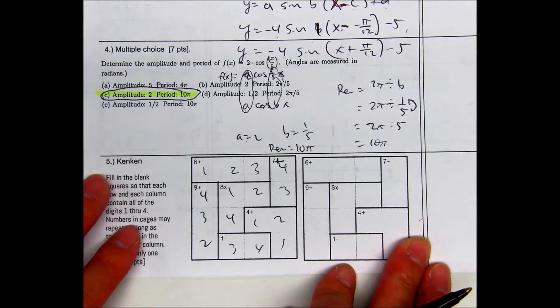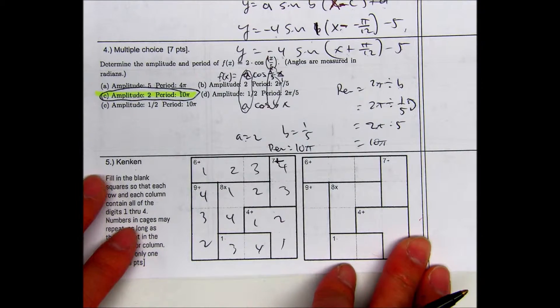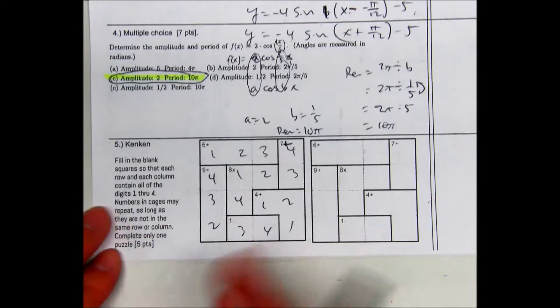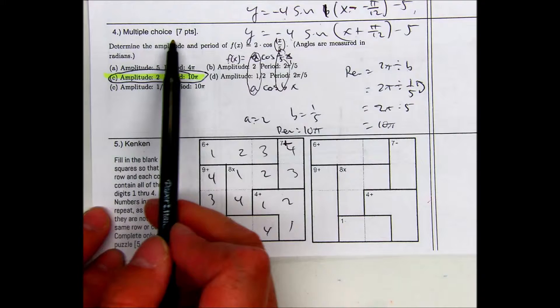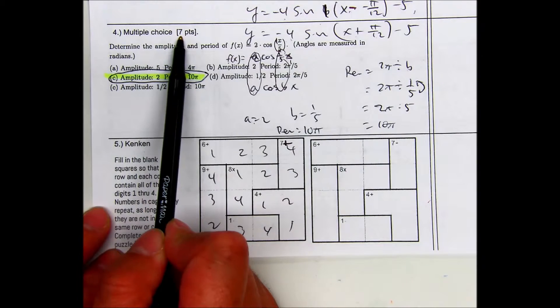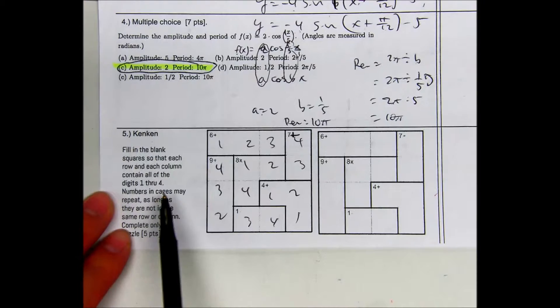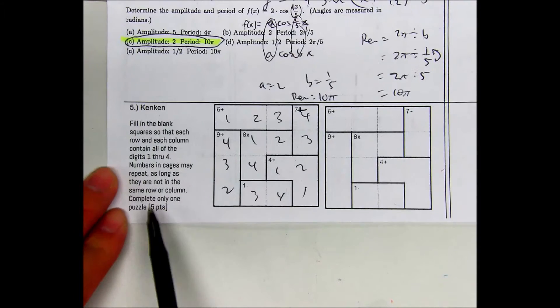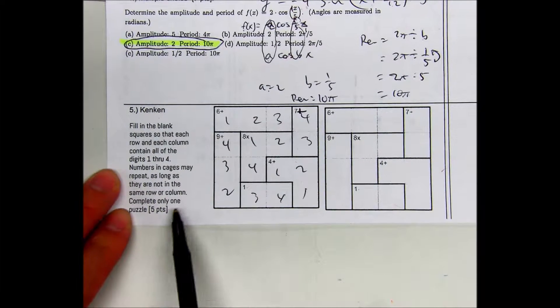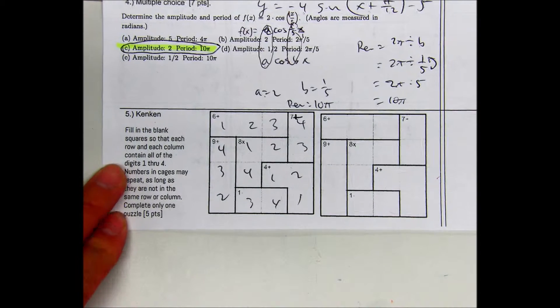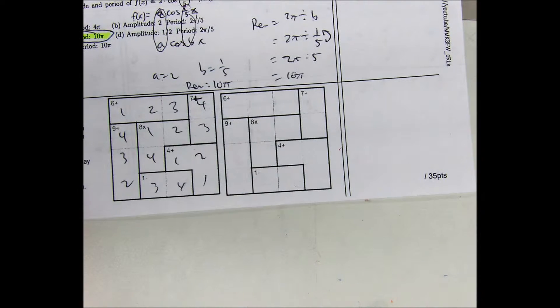Remember, Version D was out of 100 points. This was 7 points — 7 or 0. The front side should have been out of 35.